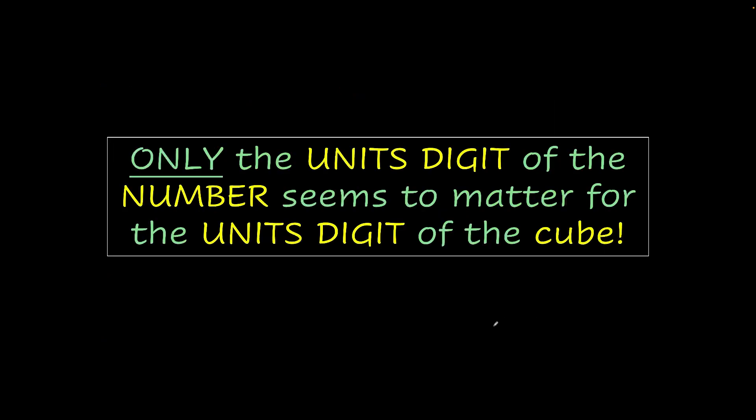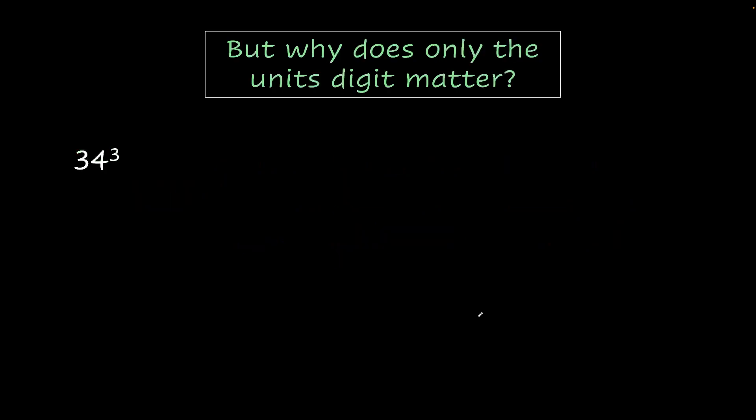This means that only the unit's digit of the number matters for the unit's digit of the cube. None of the other digits seem to contribute to the unit's digit of the cube. Now why is that? Why does only the unit's digit matter?